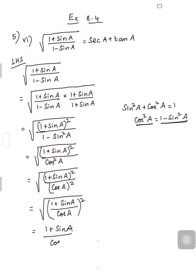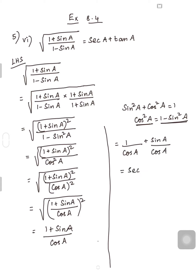So what do you get here? (1 + sinA) / cosA. That can be written as 1/cosA + sinA/cosA. What is 1/cosA? That is nothing but secA. And what is sinA/cosA? That is nothing but tanA. So that is your RHS. The strategy is: whenever you get a trigonometric ratio in a square root, multiply and divide by the conjugate, keep the square, apply the identity, and simplify. We have proved LHS is equal to RHS.